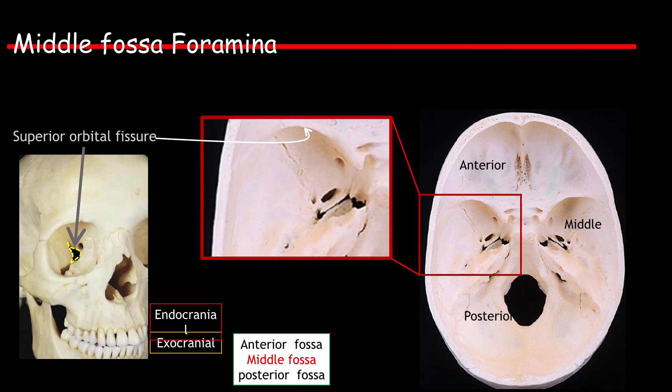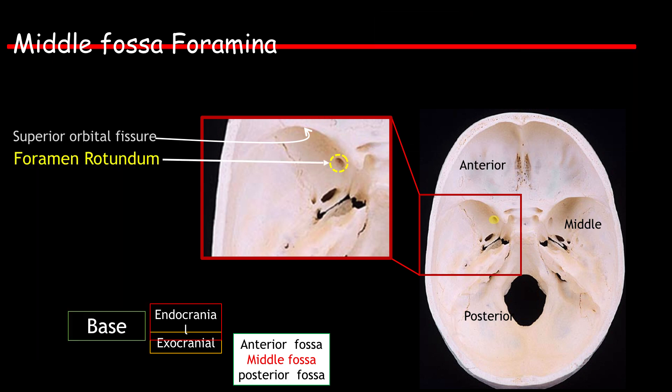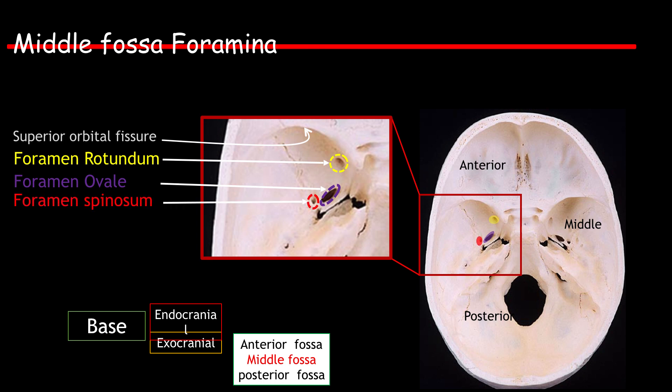Middle fossa foramina include the superior orbital fissure, optic canal, foramen rotundum, foramen ovale, foramen spinosum, and foramen lacerum.